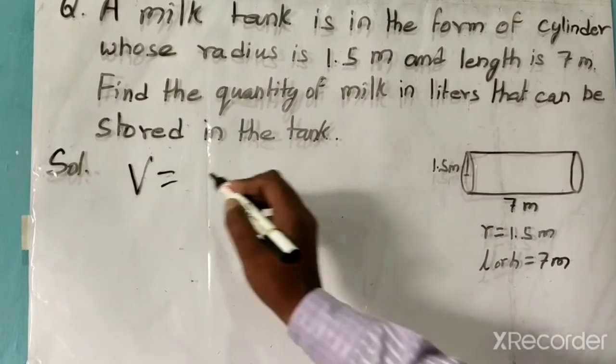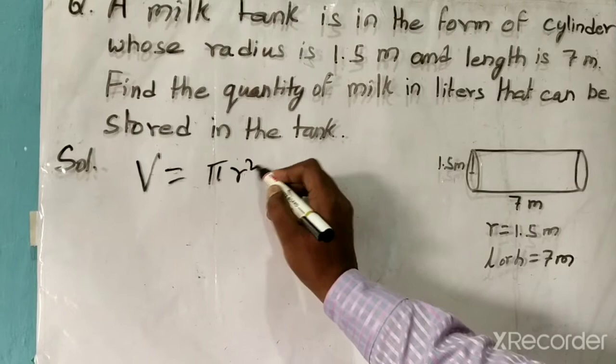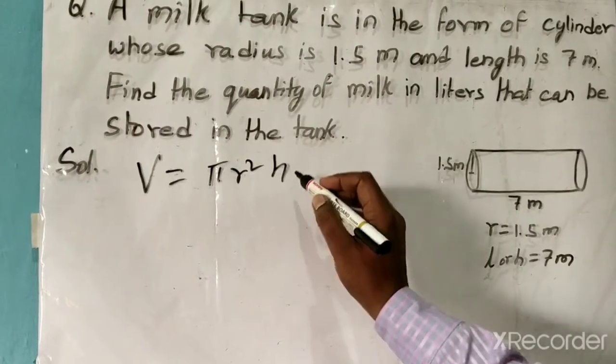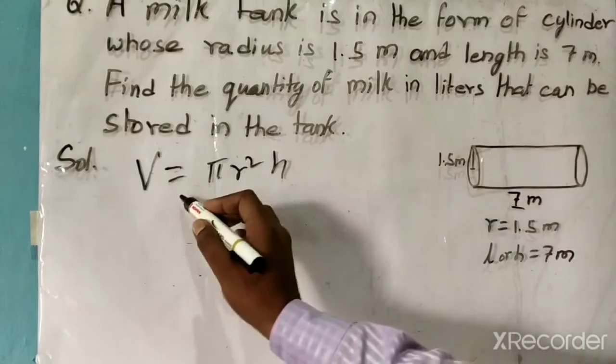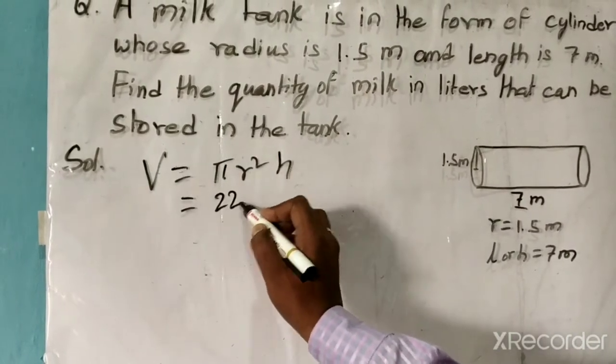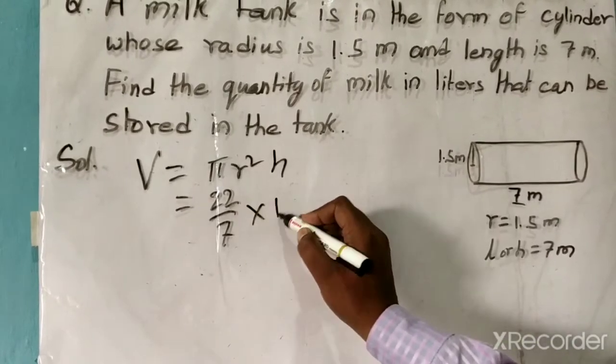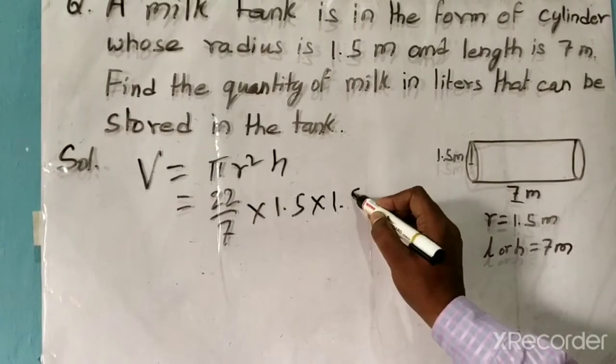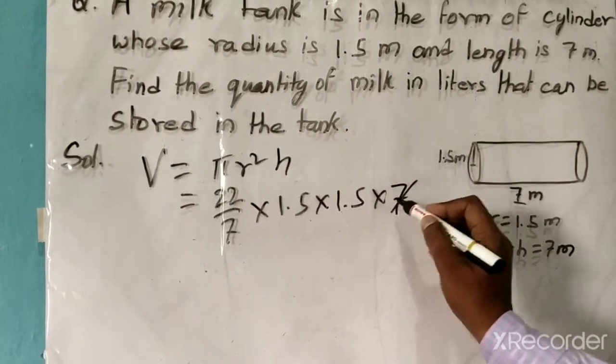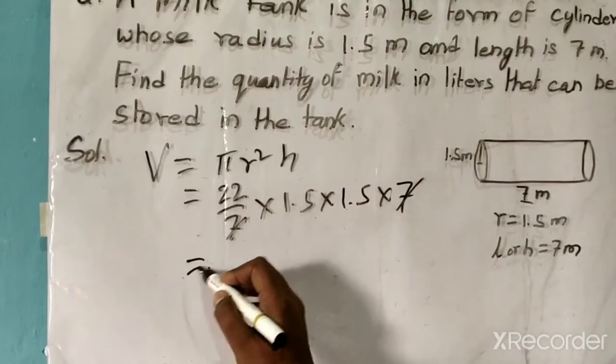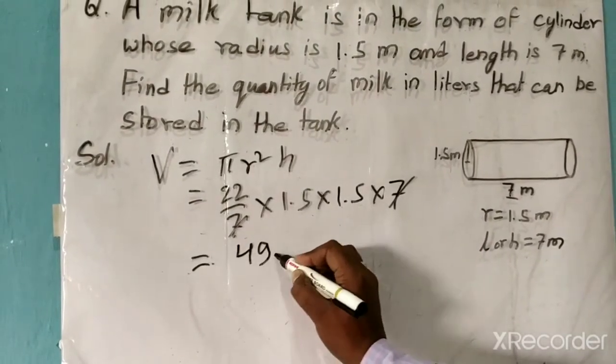Here the h is this length, 7. So 22 by 7 times r is 1.5, times 1.5, times 1.5, times this is 7. Now this 7 and this 7 will get cancelled. Now it will become 49.5 cubic meters.